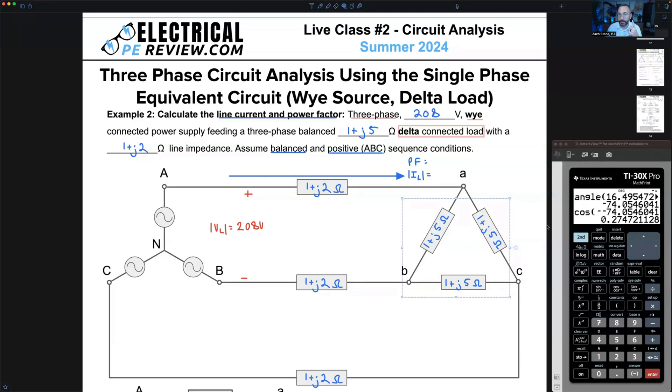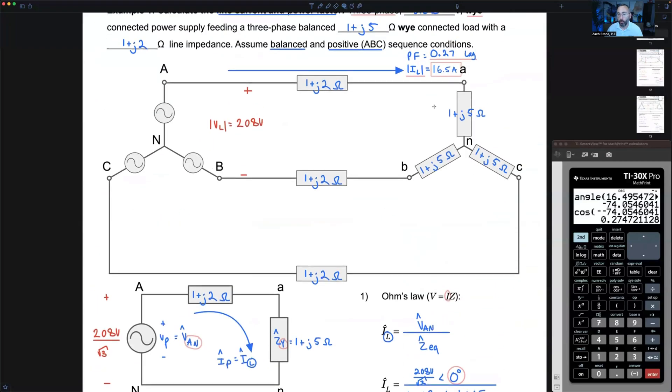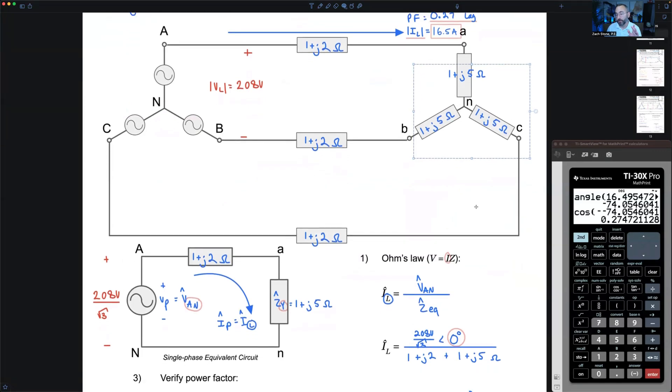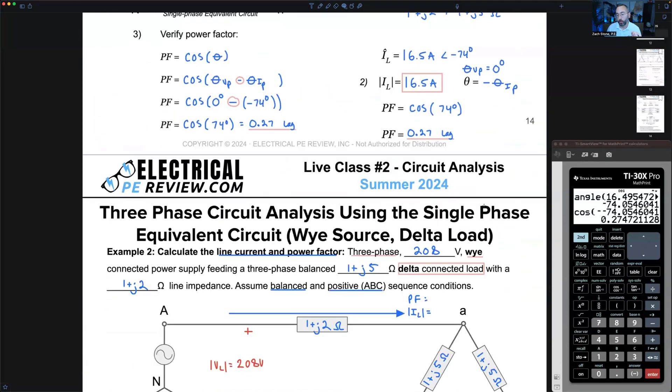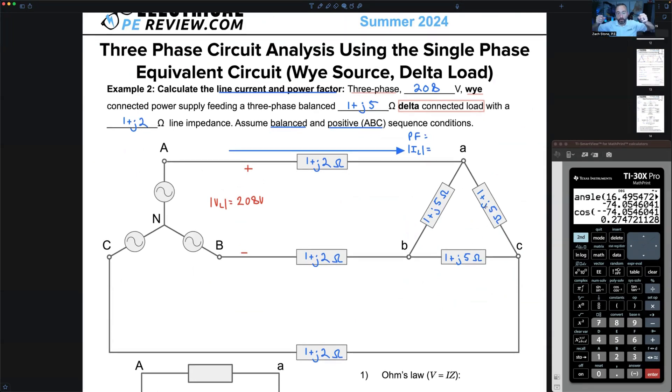Question: Is this the delta equivalent load of the previous one plus J5 ohm Y connected impedance? It is not. These two different loads are going to draw different amounts of line current and power. The previous example, we connected them in a Y connection. In this example, we shut the breaker off, pulled them apart, and connected them in a delta triangle.